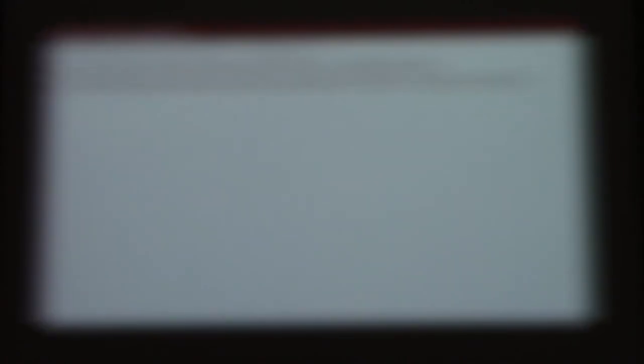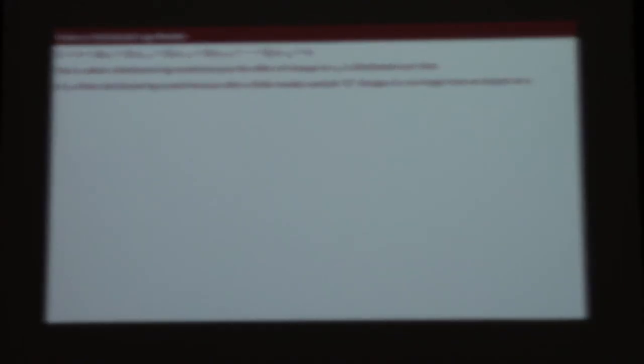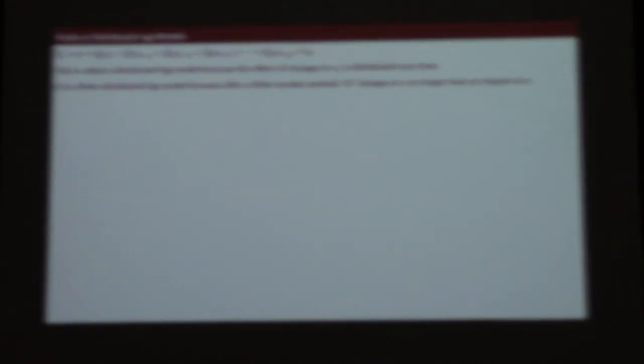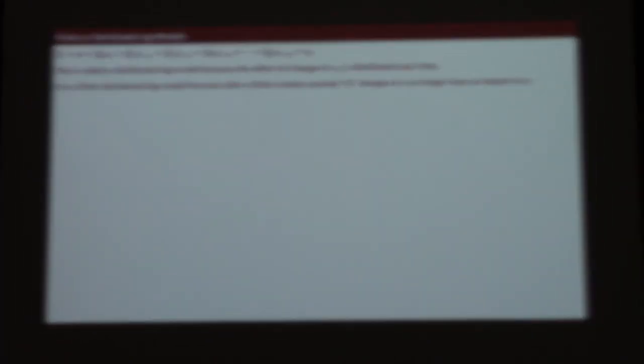Basically, it's saying we don't just respond to what's happening today — we respond to what's happened in the past. We remember commercials over time. It's called the finite distributed lag model because we're going to stop at some point: there's going to be a finite number of lags. Unlike geometric decay, which goes on forever, we'll have to figure out how to put an infinite number of lags in there — but we'll work that out too.